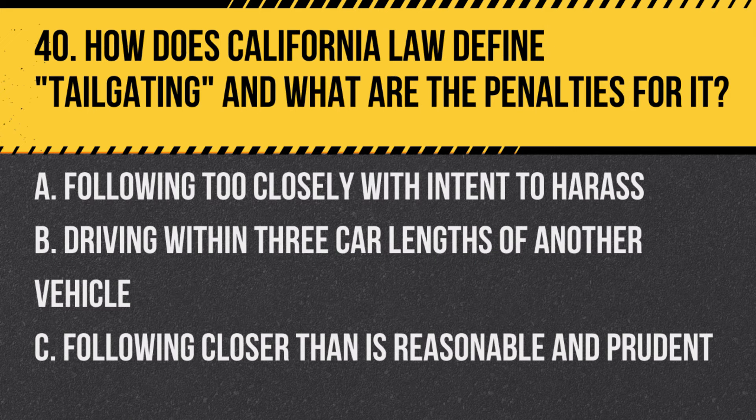Question 40: How does California law define tailgating and what are the penalties for it? A. Following too closely with intent to harass. B. Driving within three car lengths of another vehicle. C. Following closer than is reasonable and prudent. Answer: C. Following closer than is reasonable and prudent. Tailgating is defined as following another vehicle more closely than is reasonable and prudent, considering the speed of vehicles, traffic, and road conditions.